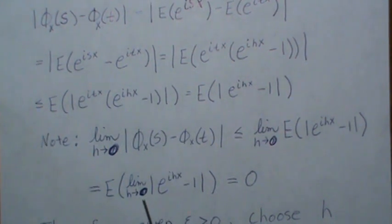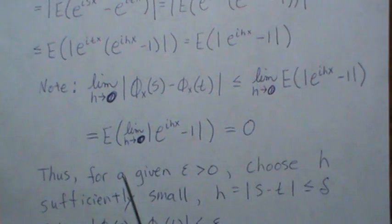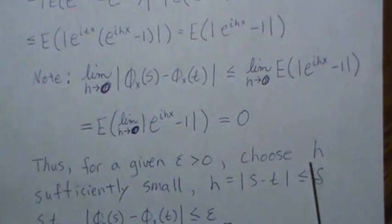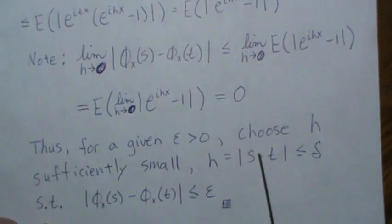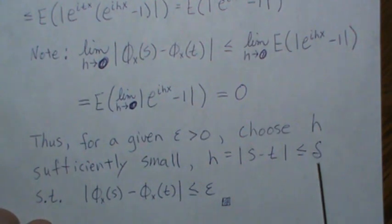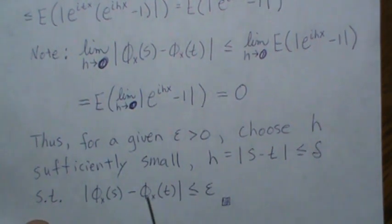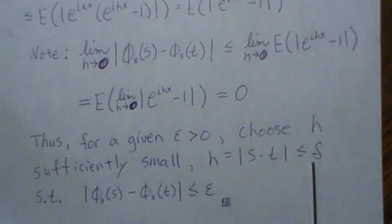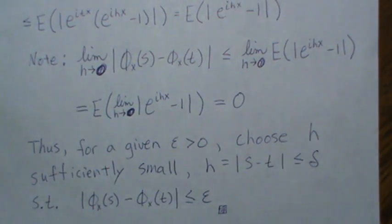As h → 0, e^{ihX} → 1, so e^{ihX} - 1 → 0, and E[|e^{ihX} - 1|] → 0. Thus for a given ε we can choose h sufficiently small so that |φ(s) - φ(t)| < ε, which satisfies the definition of uniform continuity.